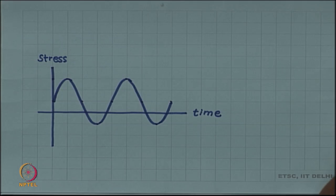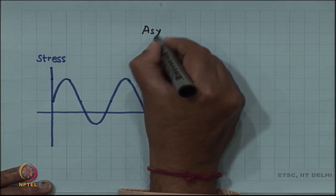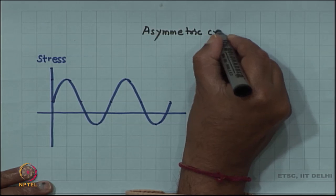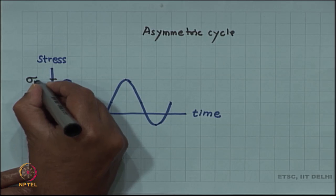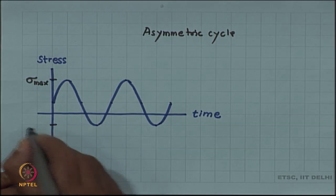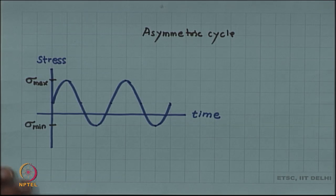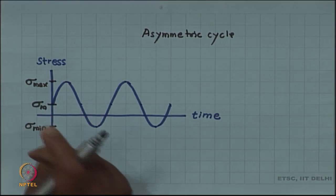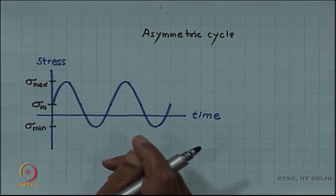That was a completely reversed cycle. This one shows an asymmetric cycle where the sigma max and sigma min are not equal in magnitude, and thus the mean sigma, sigma mean, is also not 0 but in this case has some value.